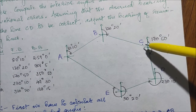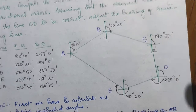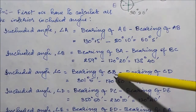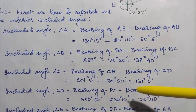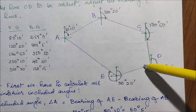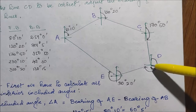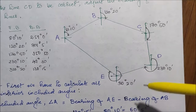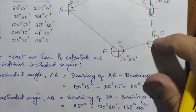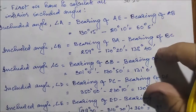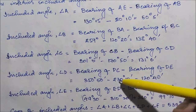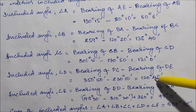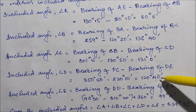The included angle C is given by the bearing of CB minus the bearing of CD, which equals 131°00′. The included angle D is given by the bearing of DC minus the bearing of DE. Bearing of DC is 350°50′ minus bearing of DE which is 230°10′, giving included angle D = 120°40′.